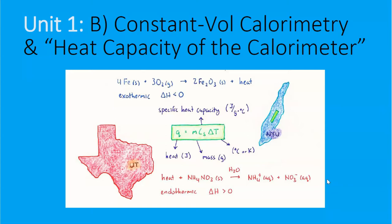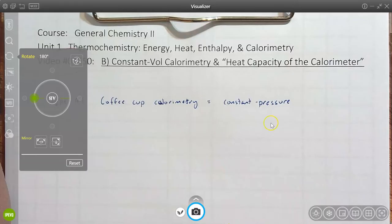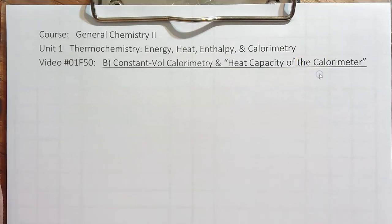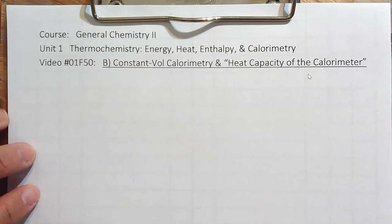In a previous video, we discussed what I call type A, which is constant pressure calorimetry. With constant volume calorimetry, we'll also be introduced to the idea that the instrument itself has its own heat capacity. We'll call it the heat capacity of the calorimeter.